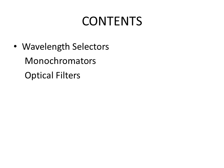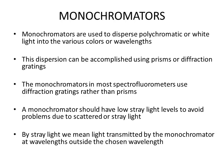In this video we'll discuss the wavelength selectors. Monochromators and optical filters are used as wavelength selectors. Fluorometers use optical filters while spectrofluorometers use monochromators, though some spectrofluorometers use both. We'll now see both monochromators and optical filters in detail. First, monochromators are used to disperse polychromatic or white light into various colors or wavelengths.